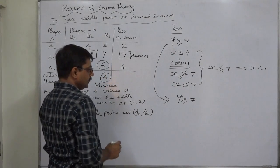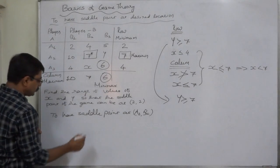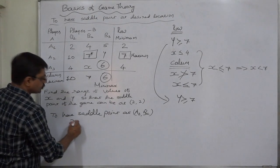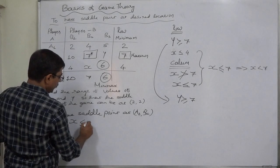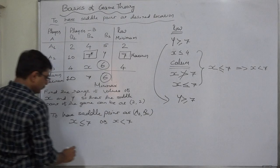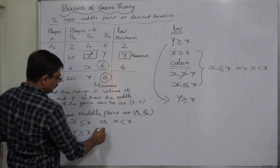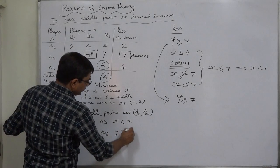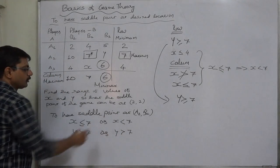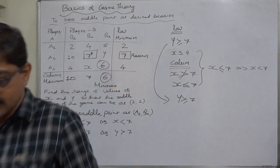So to have saddle point at A2 B2, x should be less than or equal to seven, or say x should be less than seven. Y should be greater than or equal to seven, or say y should be greater than seven. Both the conclusions are equally very well. That's all, thank you very much.